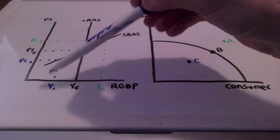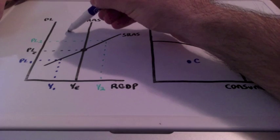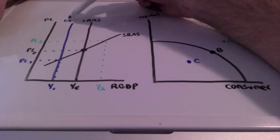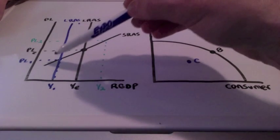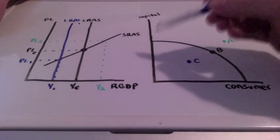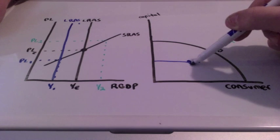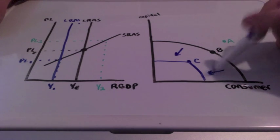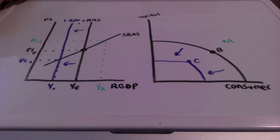If price level 1 and GDP 1 become a permanent new change, we will have a new long run aggregate supply curve, labeled LRAS1. This would result in a permanent new price level and GDP, and would also shift the production possibilities curve inward, moving downward, as our long run aggregate supply curve moves to the left.